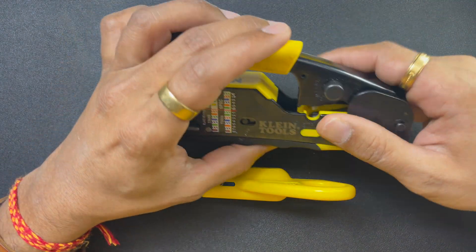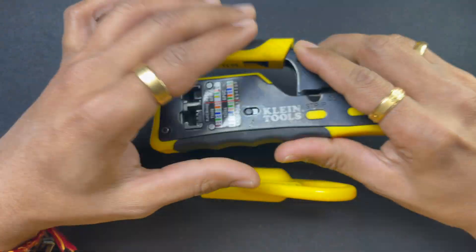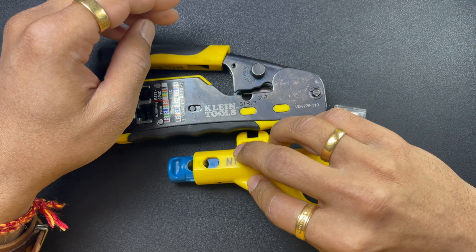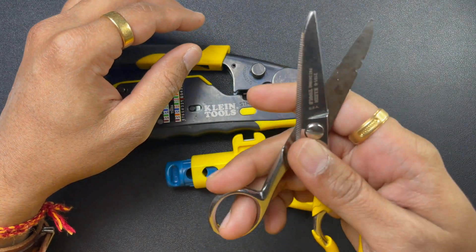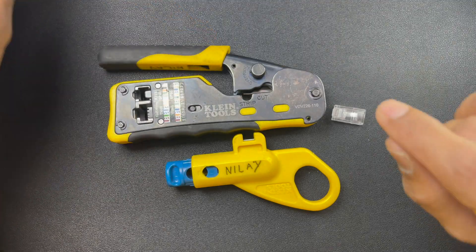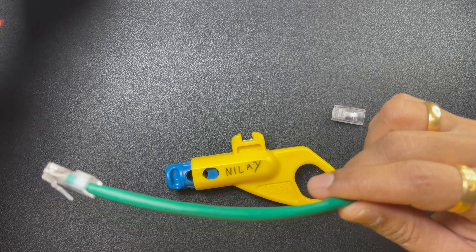Basically, you're going to need your cable crimper - I have my Klein Tools crimper with me. I have my stripper, you're also going to need scissors which I have here, and I have my piece of cable here. All right, so let's start.